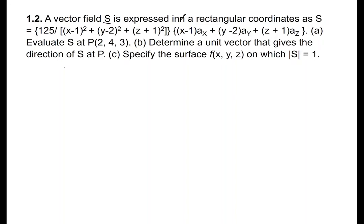We need to evaluate S at point (0,2,4,3), determine a unit vector that gives the direction of S at P, and specify the surface F(X,Y,Z) on which the absolute magnitude of S is equal to 1. A vector field is a mathematical expression of a field — for example, the direction of waves in the sea, or the gravitational field directing towards the center of the earth from anywhere in the world.